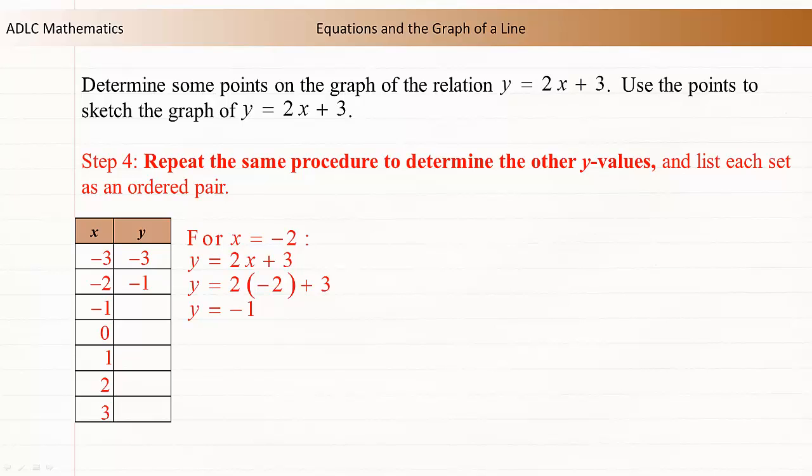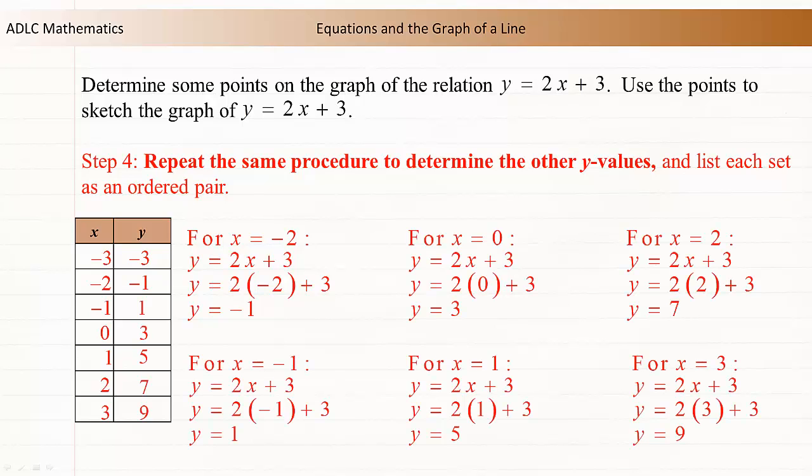Repeat the same procedure to determine other y values. For x equals negative 2, y equals negative 1. For x equals negative 1, y equals 1. For x equals 0, y equals 3. For x equals 2, y equals 7. For x equals 1, y equals 5. For x equals 3, y equals 9.